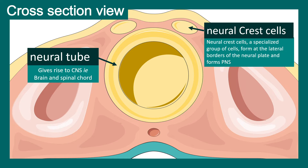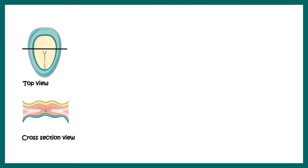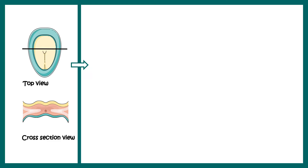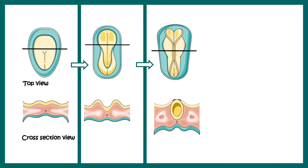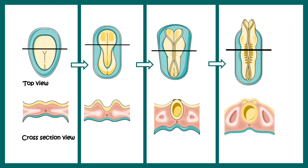So this was the overview about neurulation. Now we are going to delve into the cellular details of neurogenesis. This is the top view and the cross-sectional view together. This is the neural plate induction, the neural groove formation, and eventually the edges of the neural groove come close to each other until they fuse — and this is how the neural tube is generated.